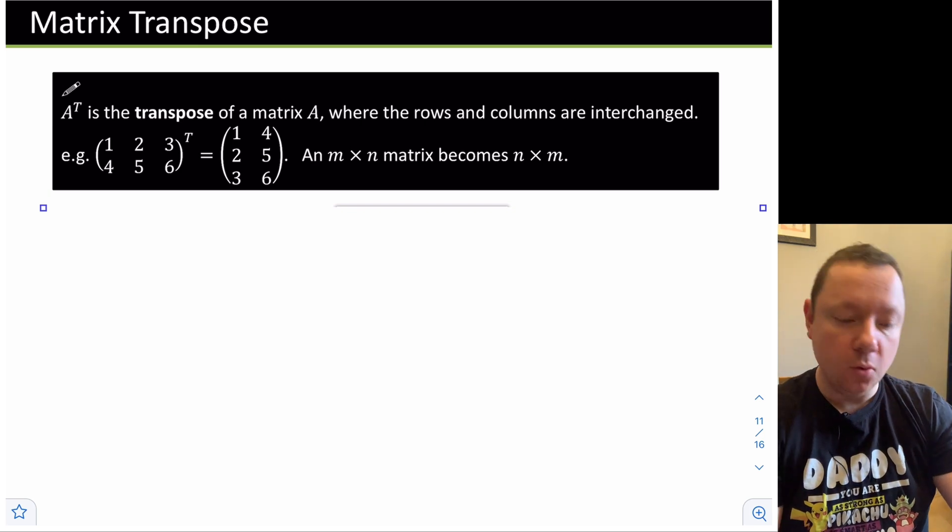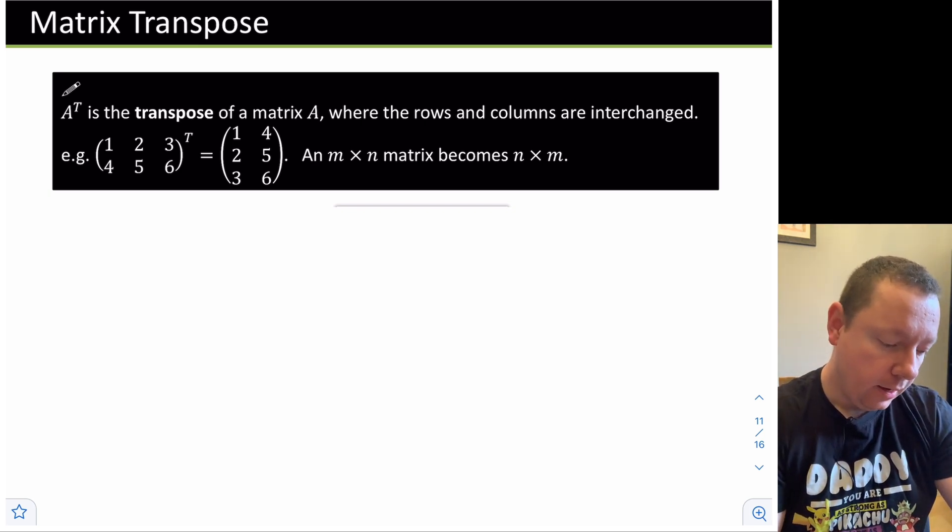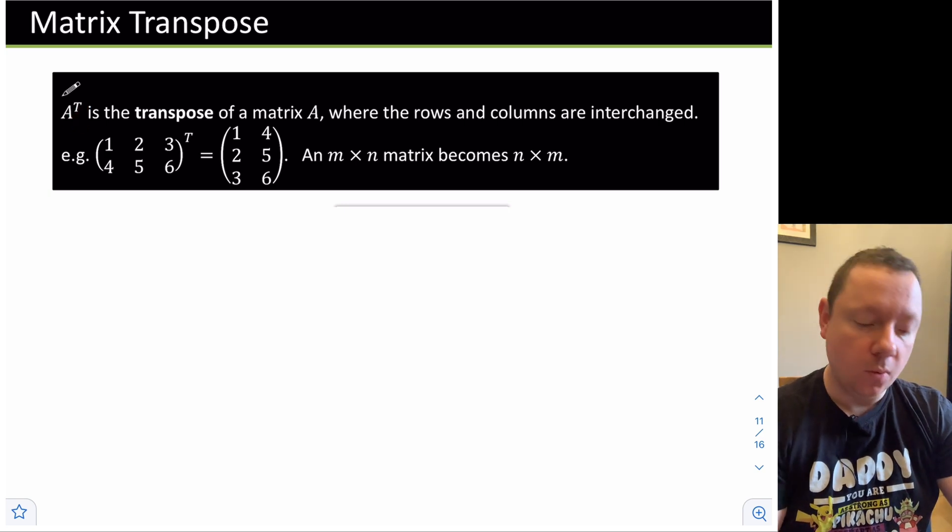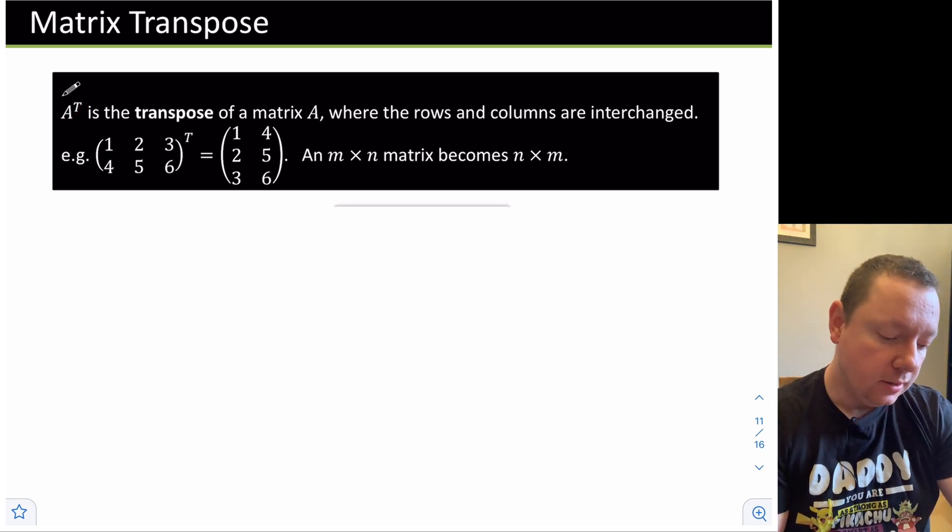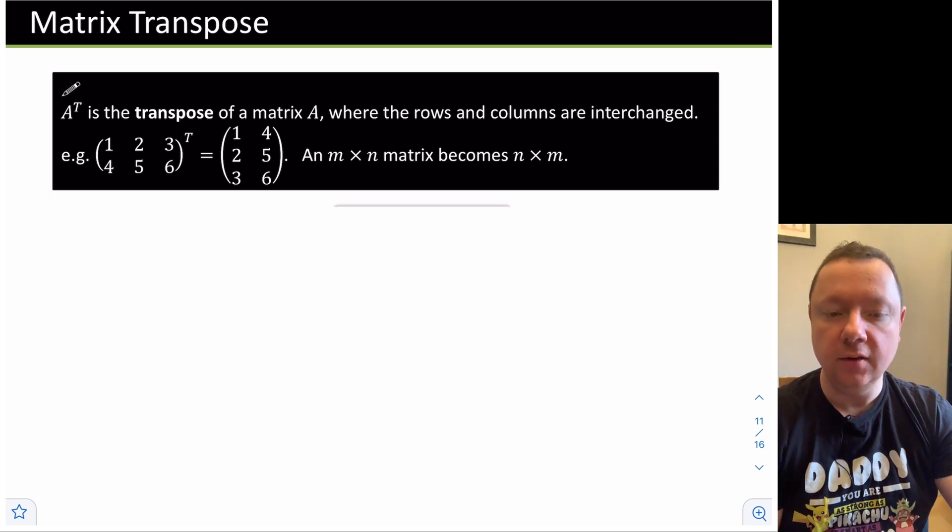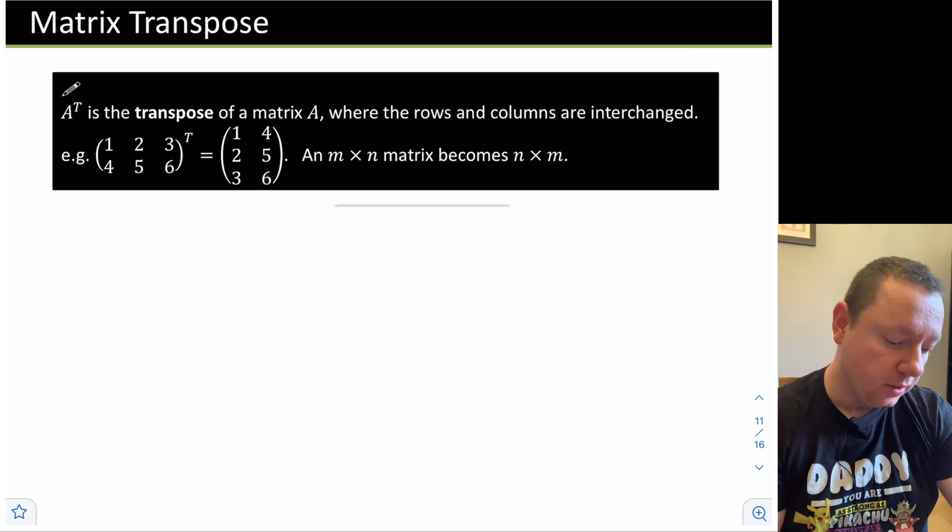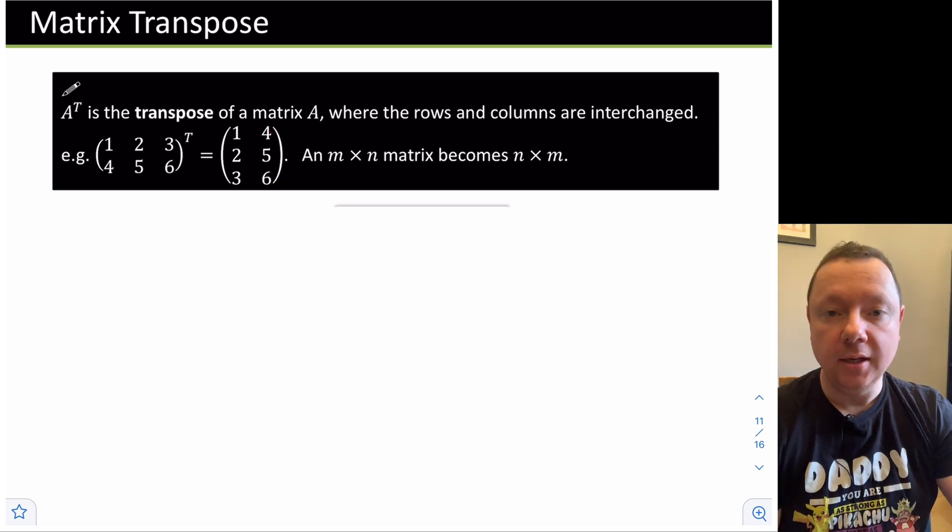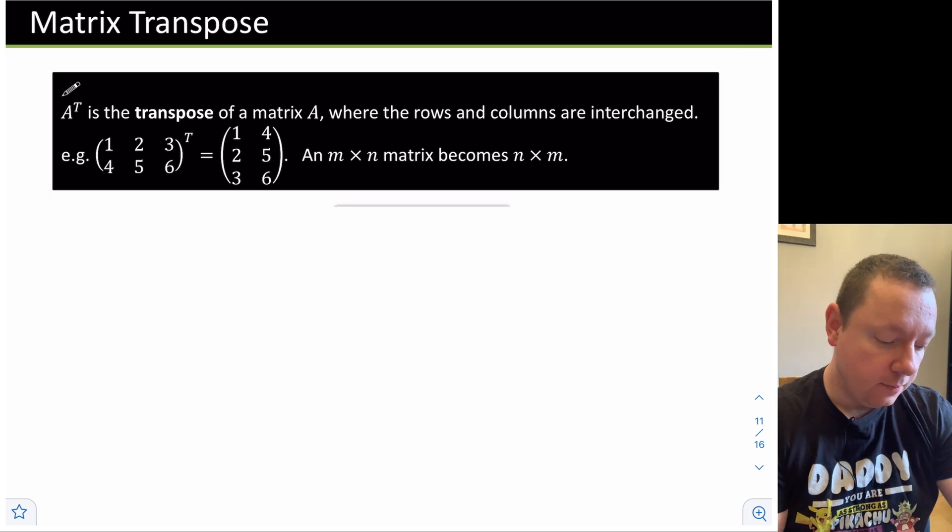Let's look at something called the transpose of a matrix. A with a T in the smaller case, not power of T, but A with a small t, is the transpose of a matrix. And all it means is you take the rows and the columns and interchange them. Here's a simple example. If we had 1, 2, 3, 4, 5, 6, and we want to transpose it, 1, 2, 3 becomes 1, 2, 3 column, and row 4, 5, 6 becomes column 4, 5, 6. Notice the dimensions of the matrix. If you started off with an M times N matrix, then you get an N times M matrix. In other words, 2 by 3 becomes 3 by 2.